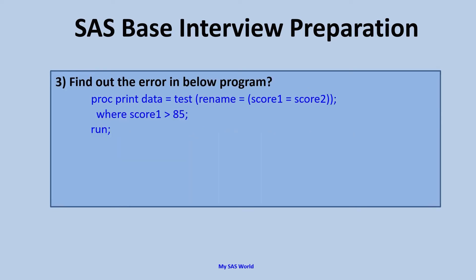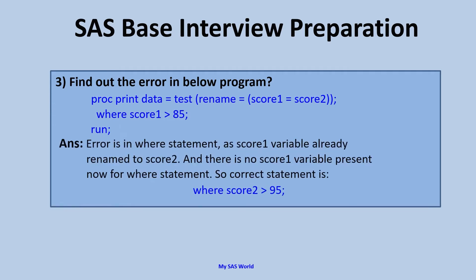Find out the error in the below program: PROC PRINT DATA=TEST with RENAME dataset option SCORE1=SCORE2. So here we are renaming the SCORE1 variable and giving it the new name SCORE2. And we are filtering it based on SCORE1 greater than 85. Since we have already renamed the SCORE1 variable to SCORE2, using SCORE1 in the WHERE clause will give an error. What we need to do is mention the renamed variable, SCORE2, in the WHERE statement.